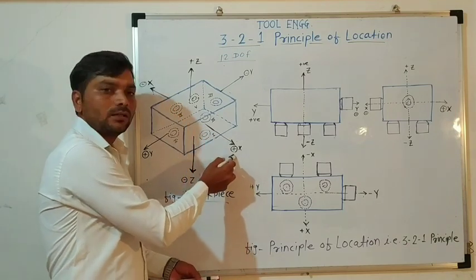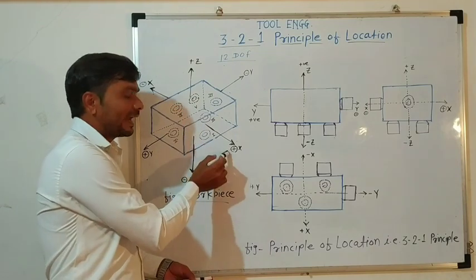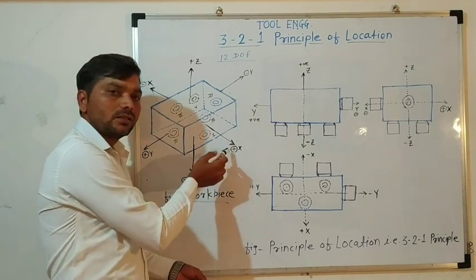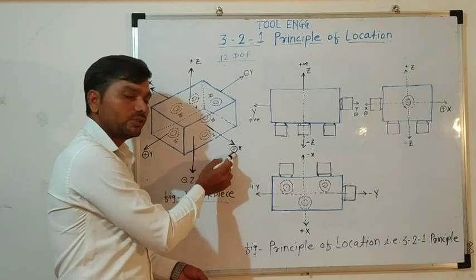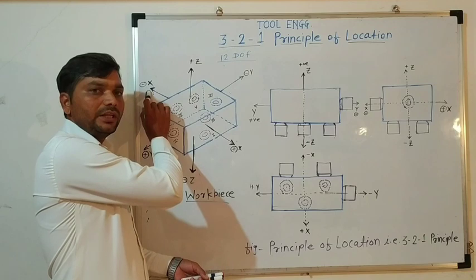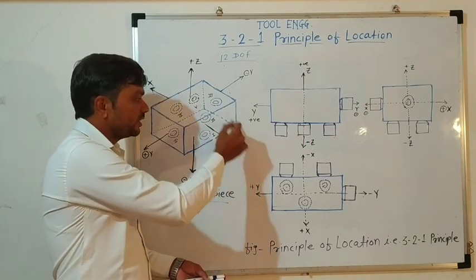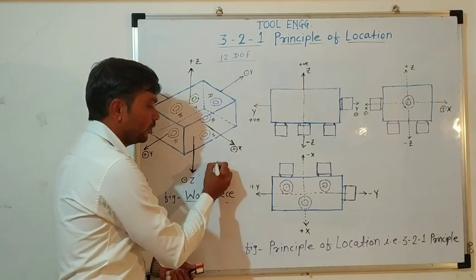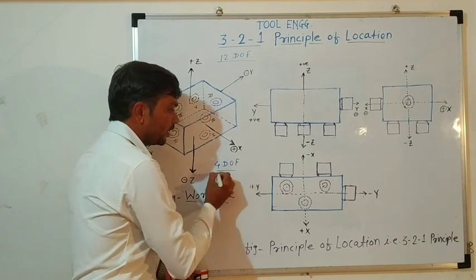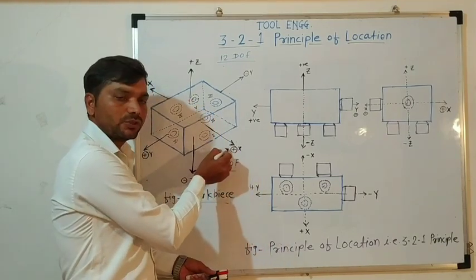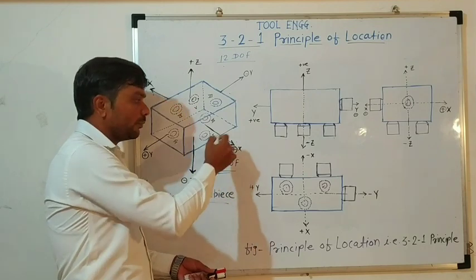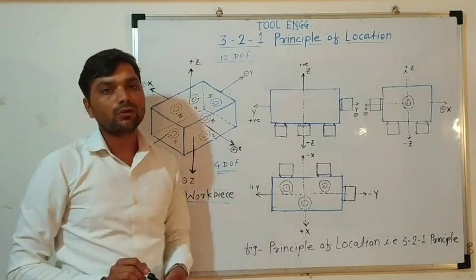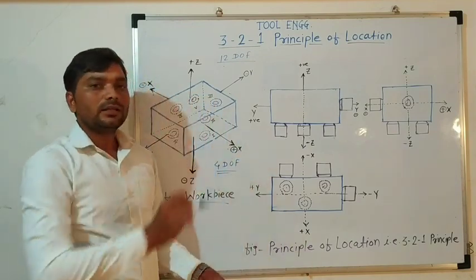First we will consider the x-axis. This object can translate or move along the x-axis — along the positive x-axis and along the negative x-axis. Again, this object can rotate along the x-axis in a clockwise manner as well as in an anticlockwise manner. So here we have a total of 4 degrees of freedom: 2 translatory and 2 rotary along the x-axis.